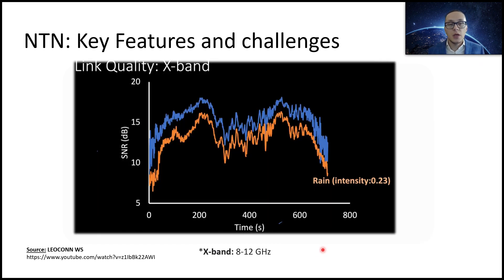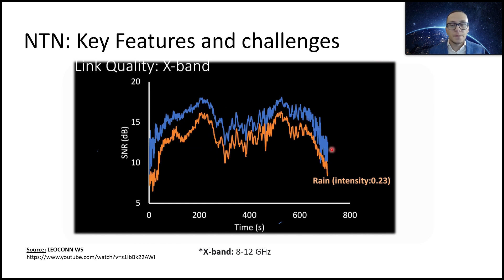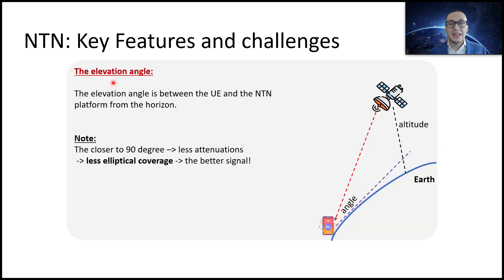Here is another example showing SNR variation over time for X-band connectivity, which is between 8 to 12 GHz. Even with light to medium rain intensity, we can see that the SNR is noticeably lower than for a regular signal. So clouds and rain also affect signal strength for satellite communication, especially for millimeter waves and high frequencies. Another important parameter is the elevation angle.